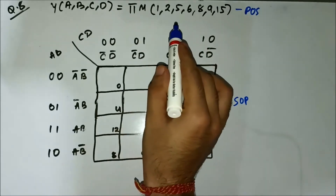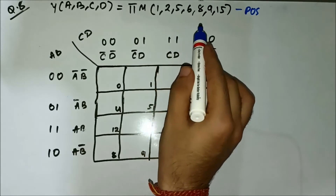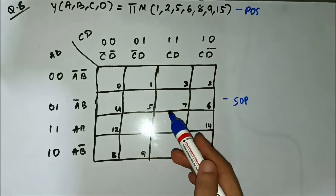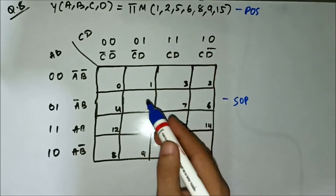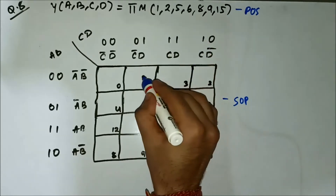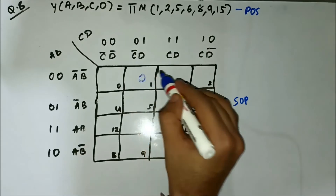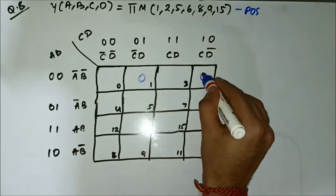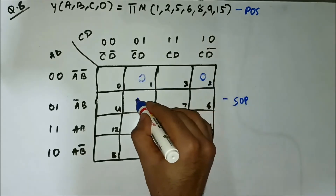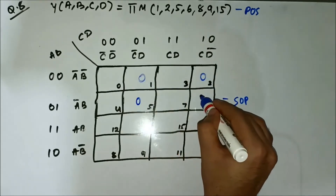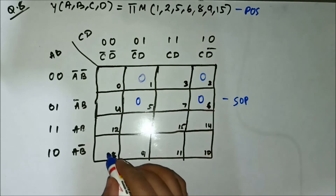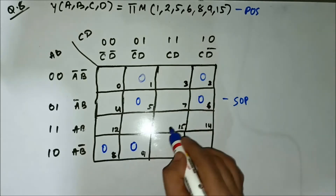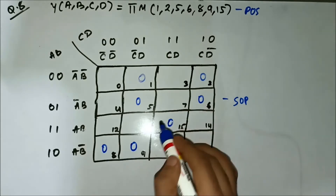The max term values are 1, 2, 5, 6, 8, 9, and 15. So we'll map these onto the K-map: 1, 2, 5, 6, 8, 9, 15.